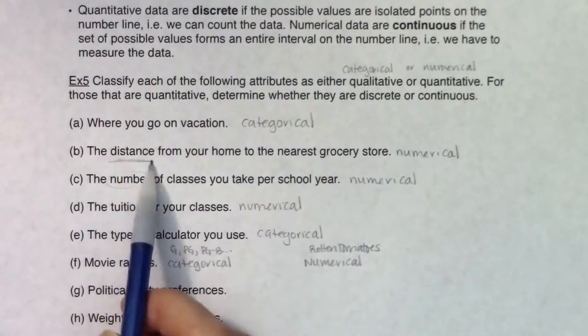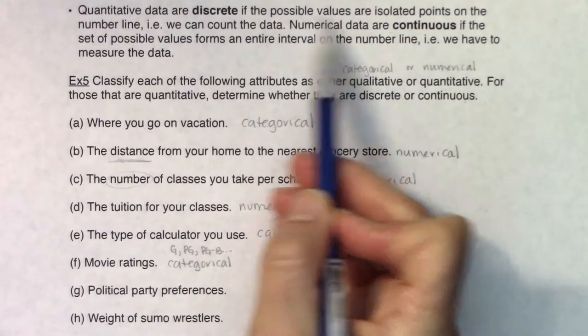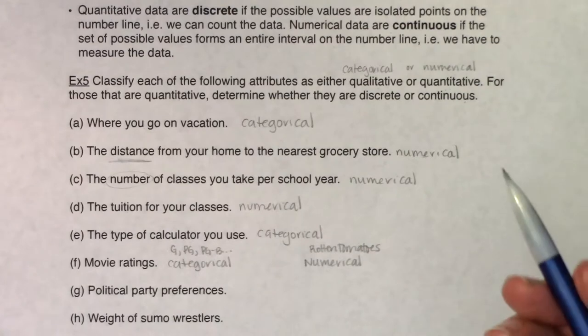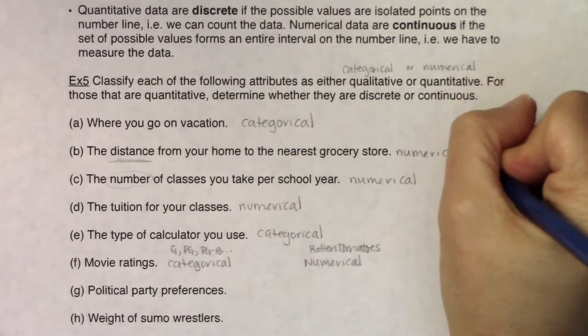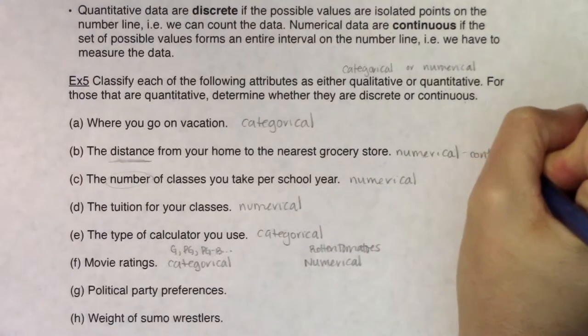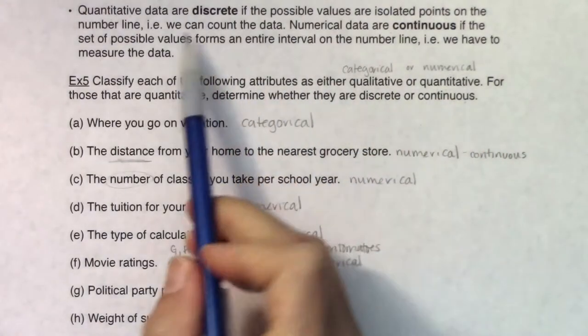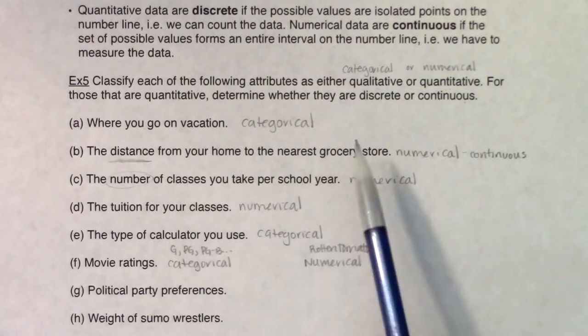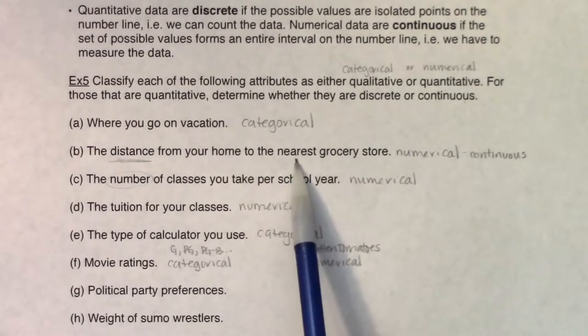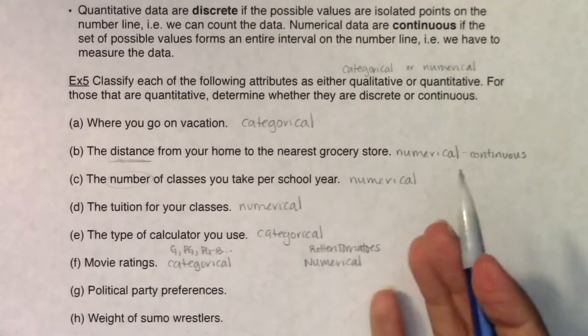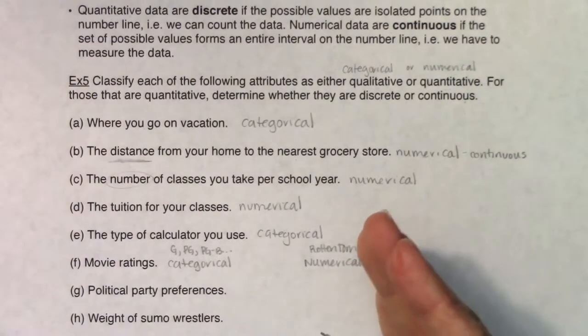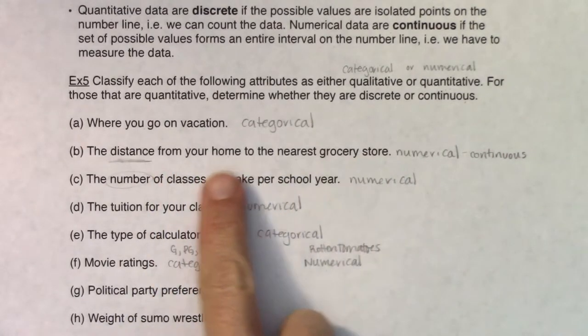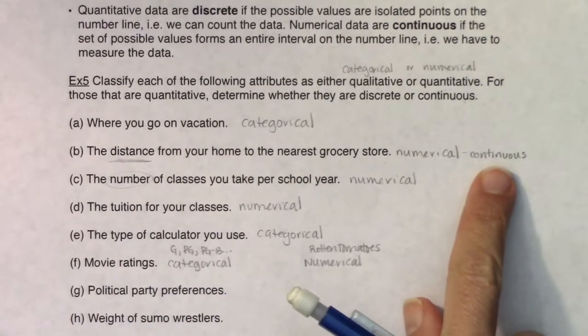The distance from your home to the nearest grocery store. Distance is my variable here. Do I count distance or do I measure distance? We measure distance, so this is going to be numerical continuous. If you think about the distance from a house to a grocery store, it could be 1.2 miles, 1.3 miles, 1.4 miles, 1.47896 miles. It can be any distance.